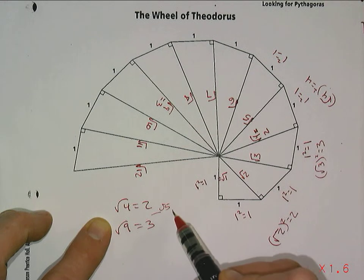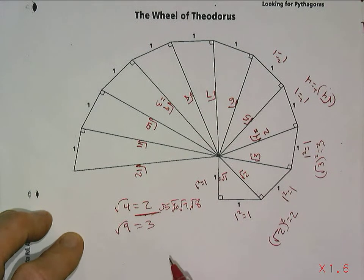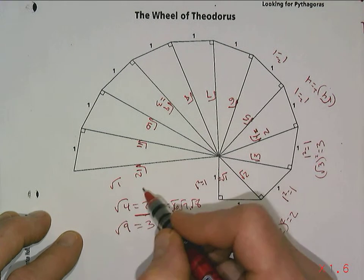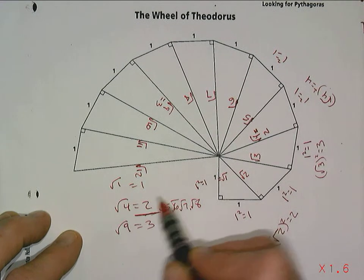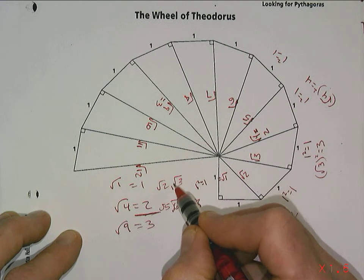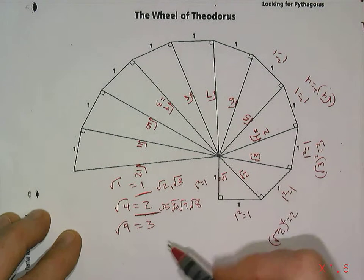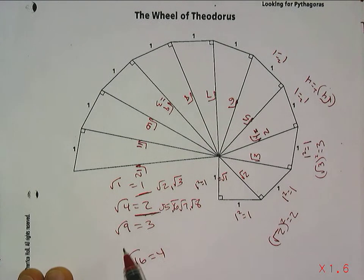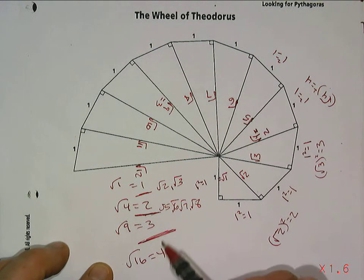Between the square root of one and two, there are only the square roots of two and three — just two numbers between one and two. But going further, the square root of sixteen is four, and the square roots of ten, eleven, twelve, thirteen, fourteen, and fifteen are all between three and four. So as we go further up, there are even more square roots packed between consecutive whole numbers.